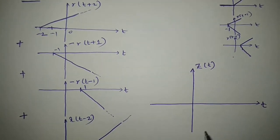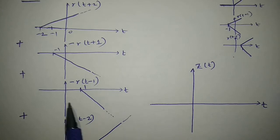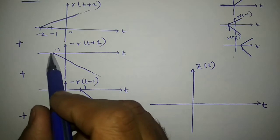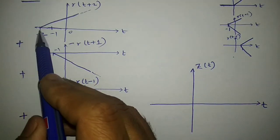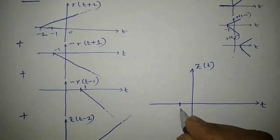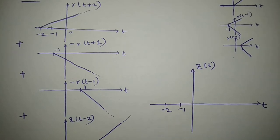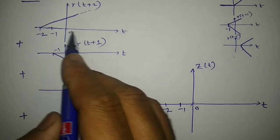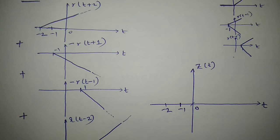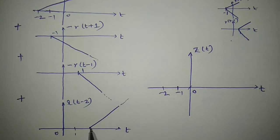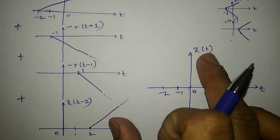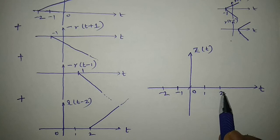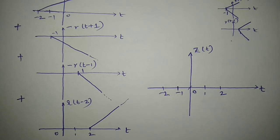To sketch the final signal Z(t), let me write down all the possible limits the signal Z(t) is taking. The first signal is starting at minus 2, that is the extreme left unit. So I would indicate minus 2, minus 1. This is 0, and moving on, the extreme right unit — with respect to the last signal, it is starting at 2. So this would be 1, 2. These are all the possible limits the final signal Z(t) takes, existing from minus 2 to plus 2.